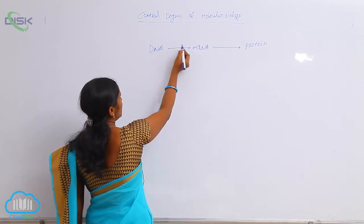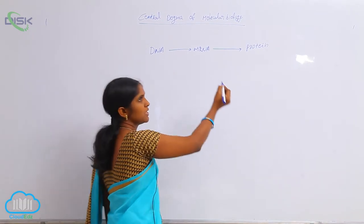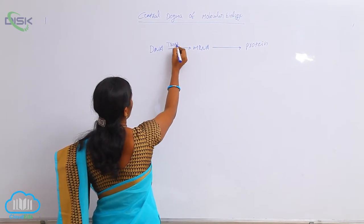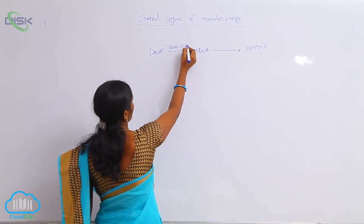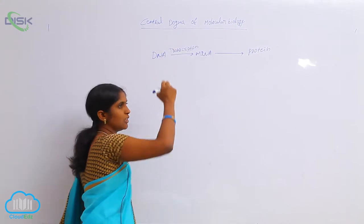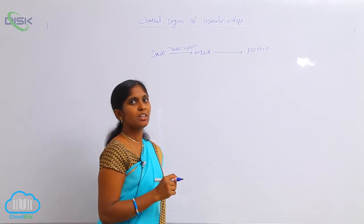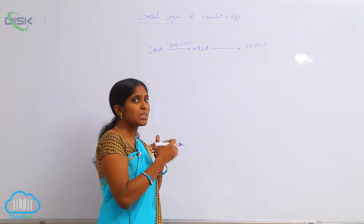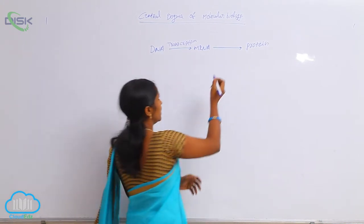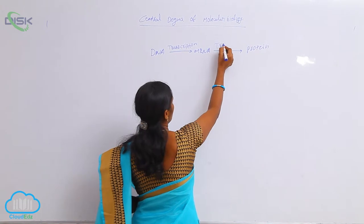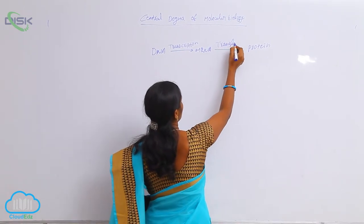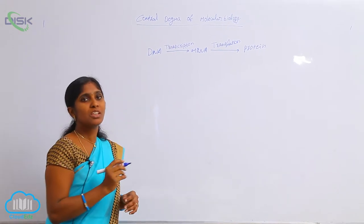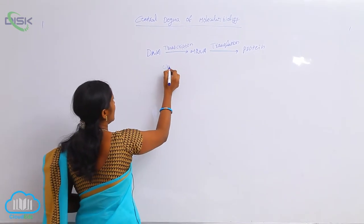DNA to mRNA: the genetic information is carried in the form of transcription. After the formation of mRNA, mRNA is a key component for protein synthesis — it carries a message from the DNA to proteins in the process of translation. So the genetic information flow is unidirectional.